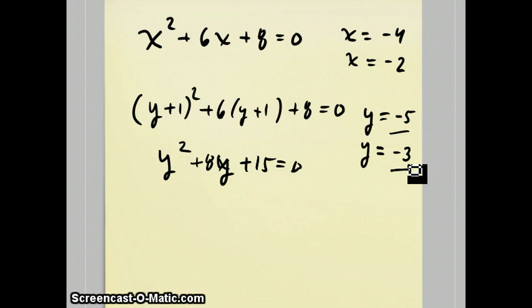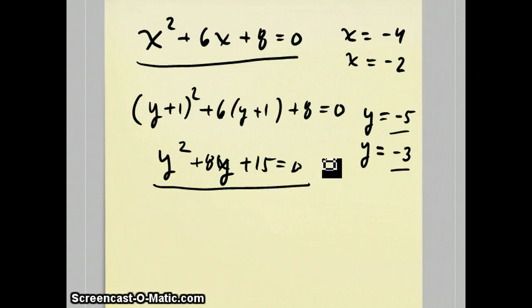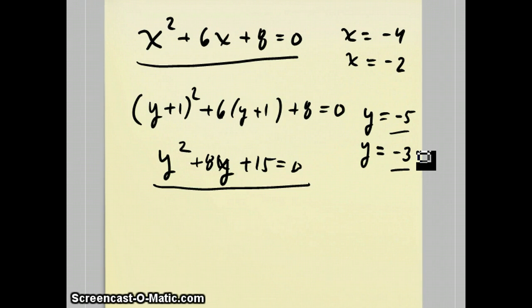The idea is: by replacing all the x's with something like y plus something, or y minus something, we get a new equation whose answers are related to the original. Hopefully that new equation might be easier to solve. If we didn't know how to solve the top equation but did know how to solve the bottom one, we could do the transformation of variables, solve the new equation, and use it to find the answers to the original. In this case both equations require factoring, so the new equation is not any easier.